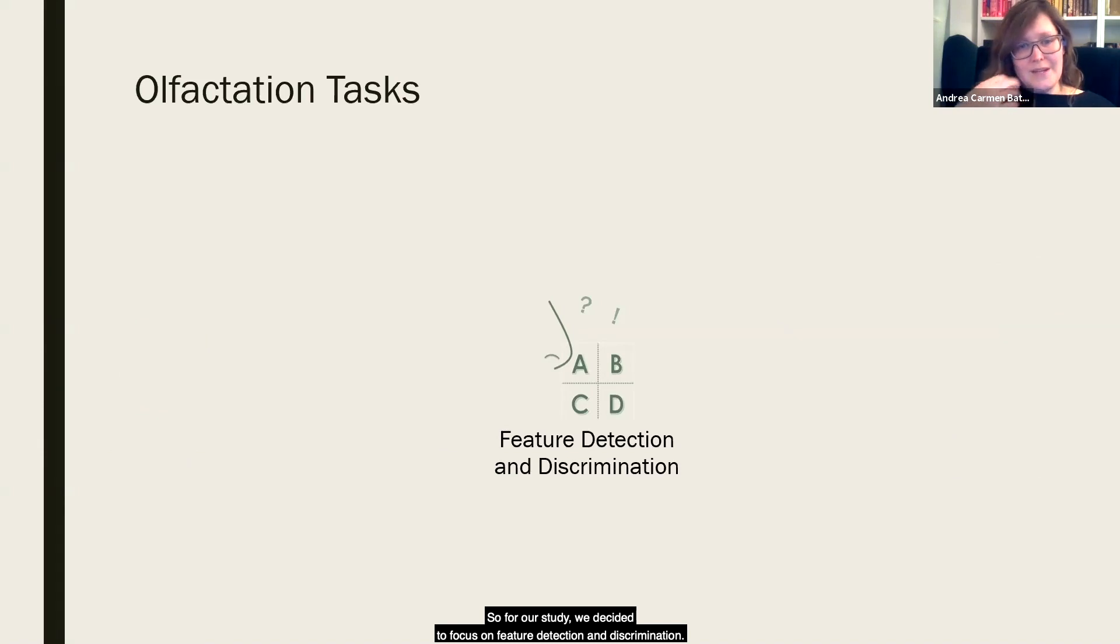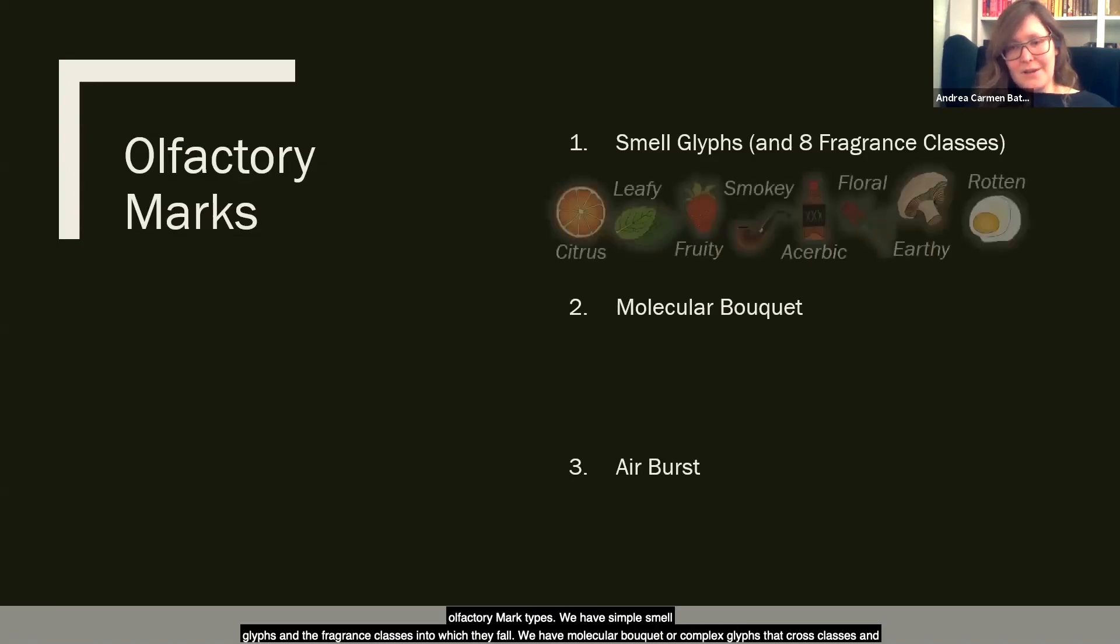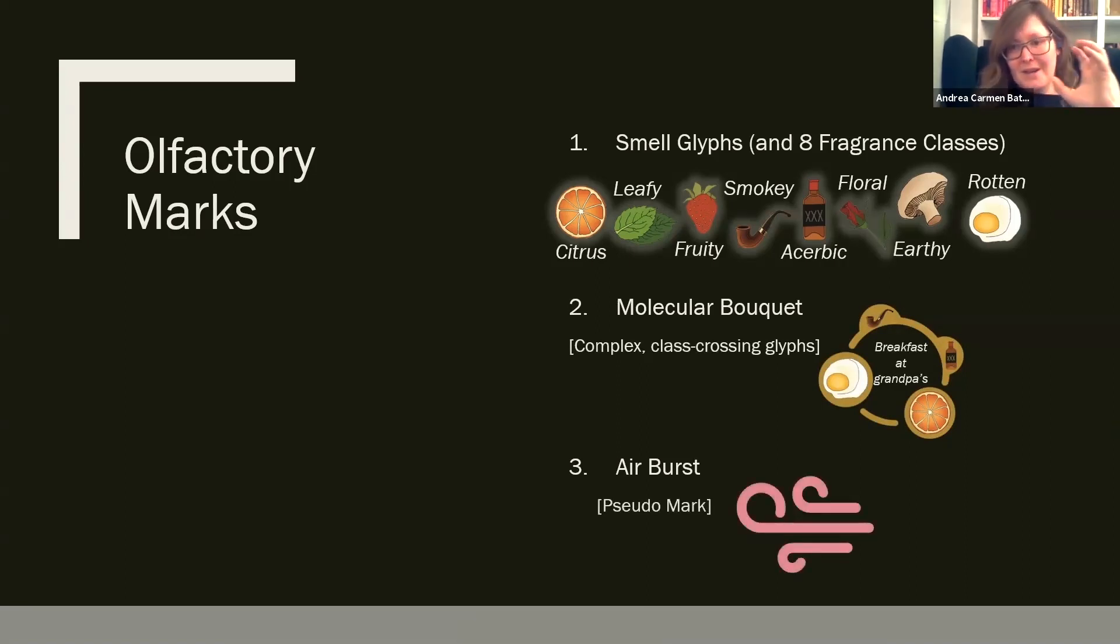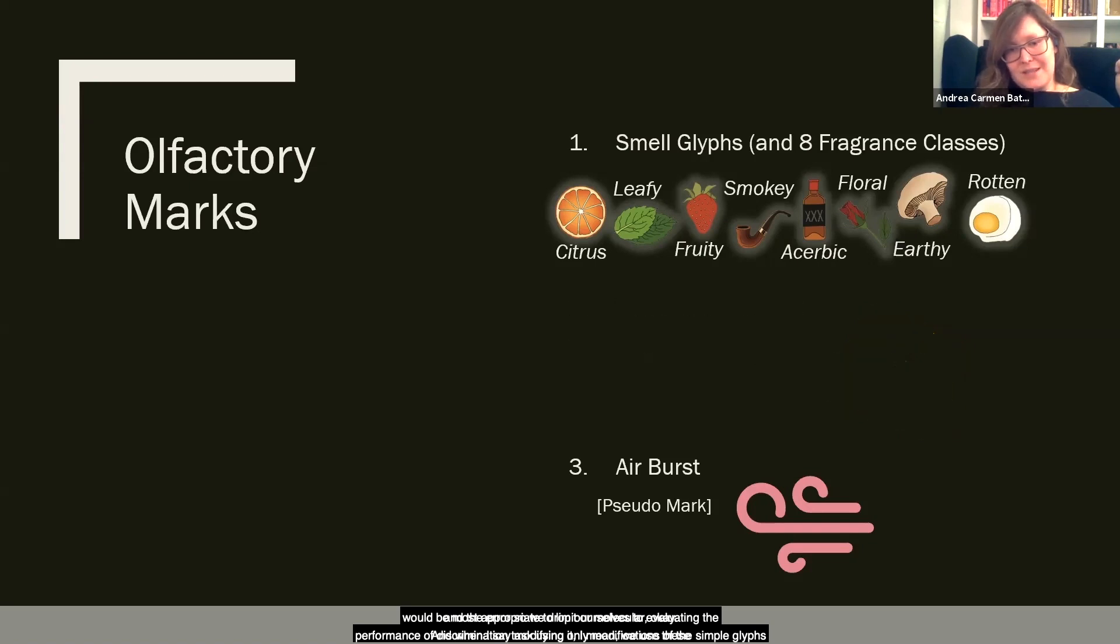So for our study, we decided to focus on feature detection and discrimination. And as a part of our design space, we introduced these three olfactory mark types. We have simple smell glyphs and the fragrance classes into which they fall. We have molecular bouquet or complex glyphs that cross classes. And we have air burst, which is sort of a pseudo mark that's part mark, part substrate or medium of conveyance. And because scent is so heavily cross-modal, the perception of smells depends not just on the chemical composition of the air, but also on aspects of the medium that it's conveyed to you on. Now for the study that we conducted, we decided that it would be most appropriate to limit ourselves to evaluating the performance of discrimination tasks using only modifications of the simple glyphs and the air burst. So we dropped our molecular bouquet.